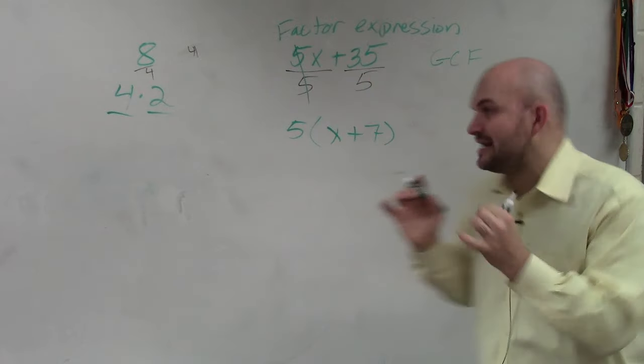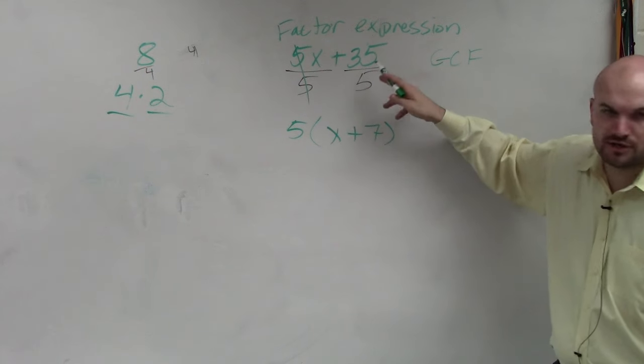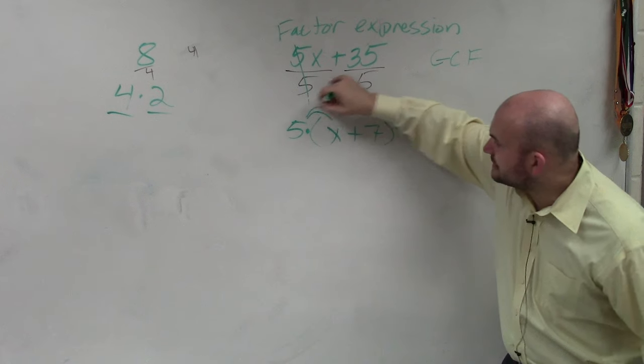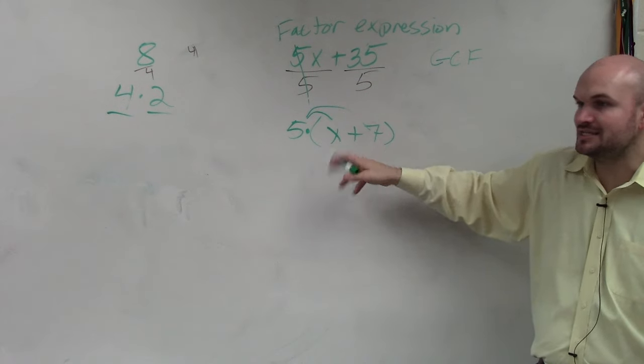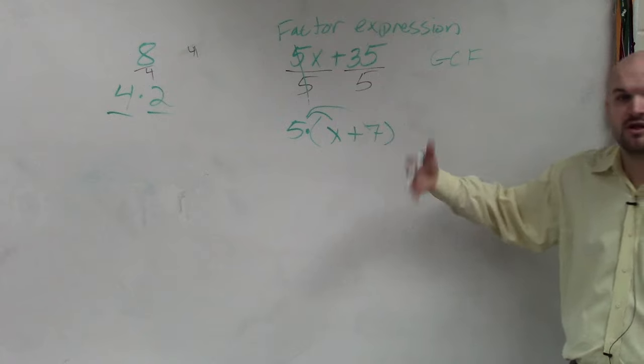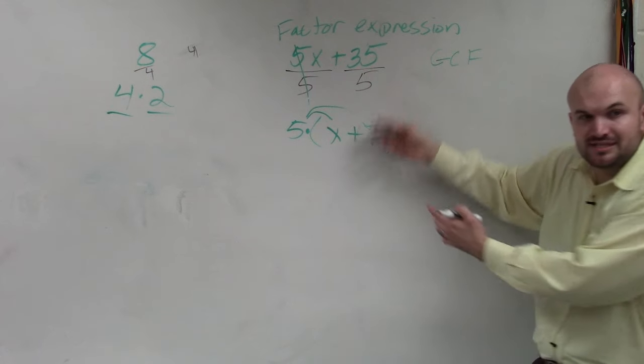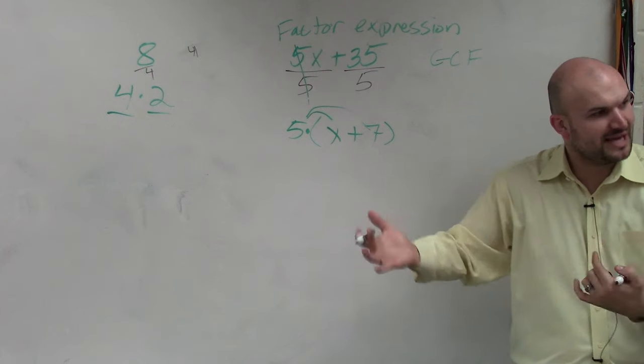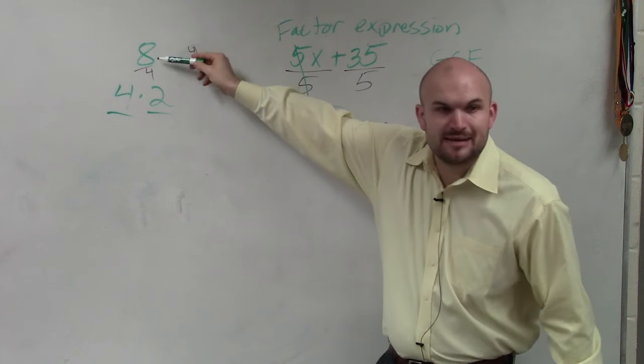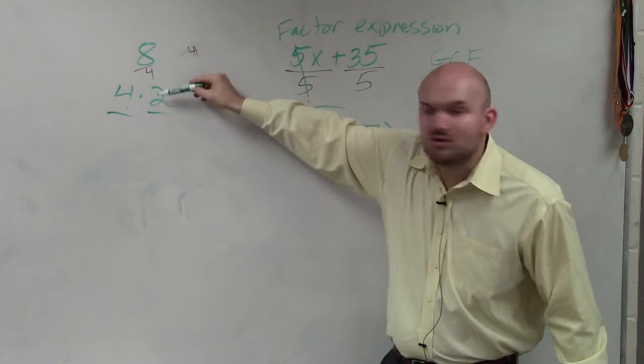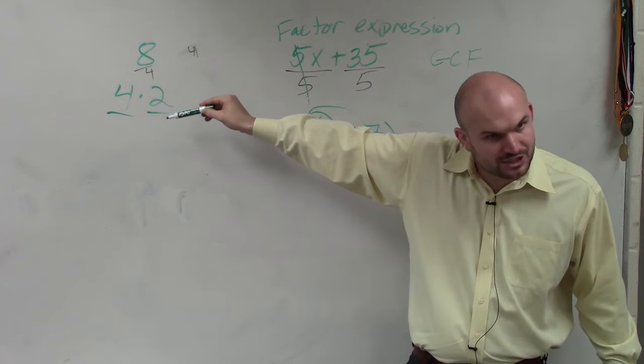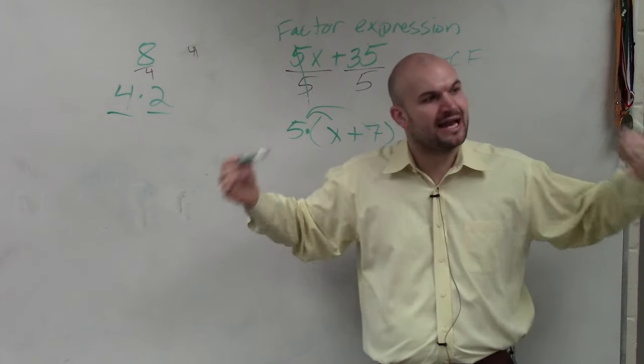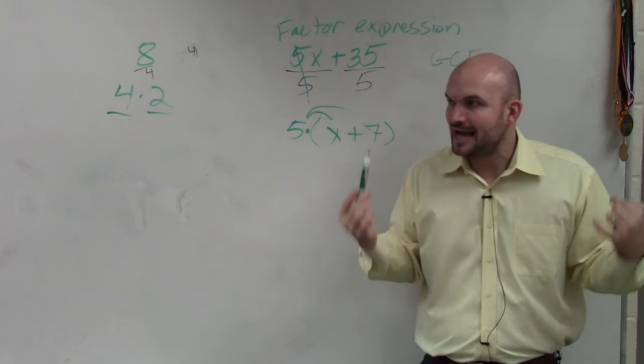Have I now rewritten the expression 5x plus 35 as a product? If I multiplied this back, 5 times x is 5x, 5 times 7 is 35. So is the answer the same? It's just rewritten as a product, as multiplication. Is 4 times 2 the same as 8? Yes. But 4 times 2 is written as multiplication. That's why we do factoring. We want to rewrite the expression as a product, as multiplication.